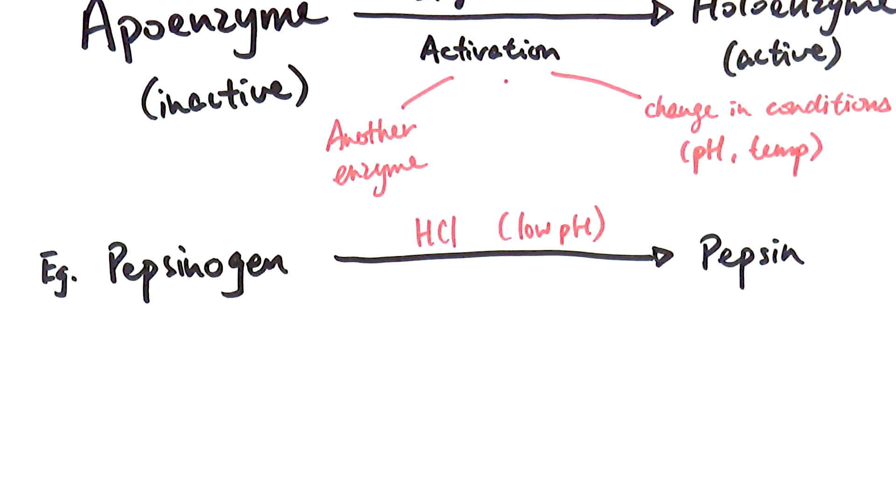This mechanism, cleverly, would stop the production site of any enzymes that you have from being destroyed by the product itself. This is why it's important that we have an apoenzyme, which is the inactive precursor, and then we activate it in some method to turn it into the holoenzyme when we actually need it.